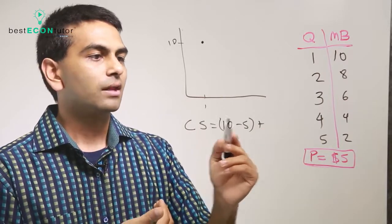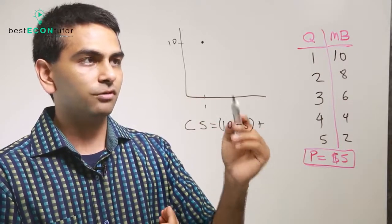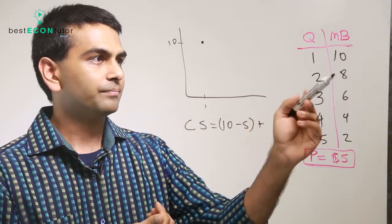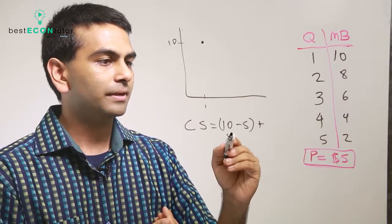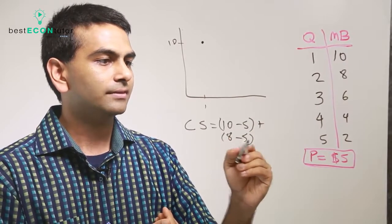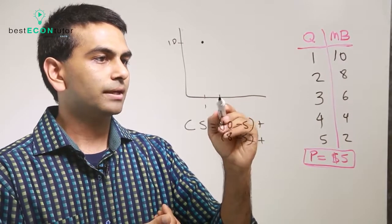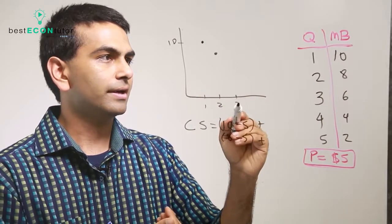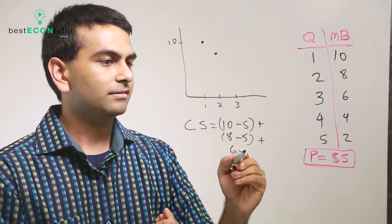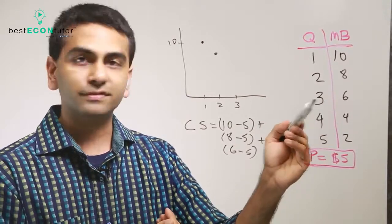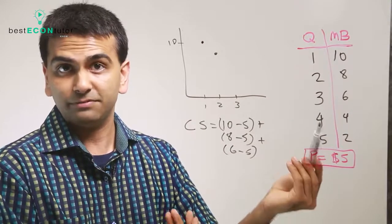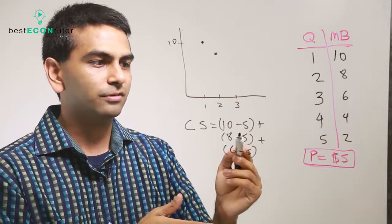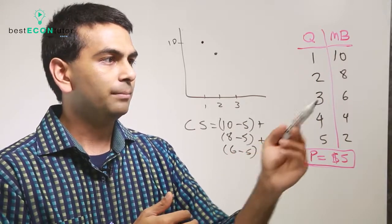Your consumer surplus so far is that difference for the first item. For the second item, you're willing to pay $8 but you paid $5, so that's $8 minus $5. For the third item, you're willing to pay $6 but again only pay $5, so that's $6 minus $5. For each unit you take the marginal benefit and subtract the price, then add those all up.